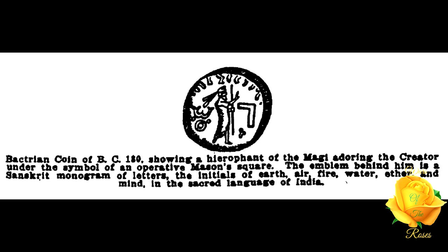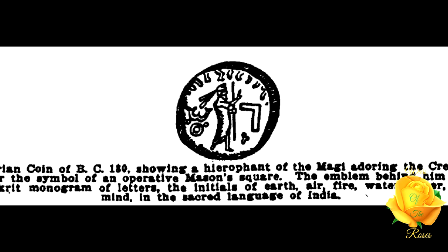A Bactrian coin of BC 180 shows a hierophant of the Magi adoring the creator under the symbol of an operative mason's square. The emblem behind him is a Sanskrit monogram of letters — the initials of earth, air, fire, water, ether, and mind — in the sacred language of India.